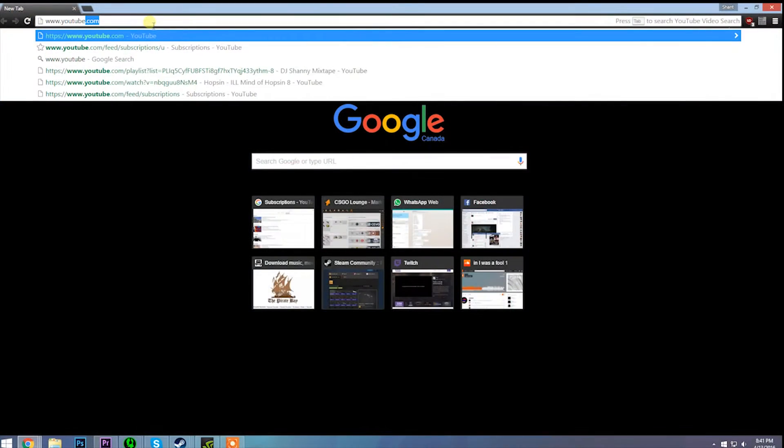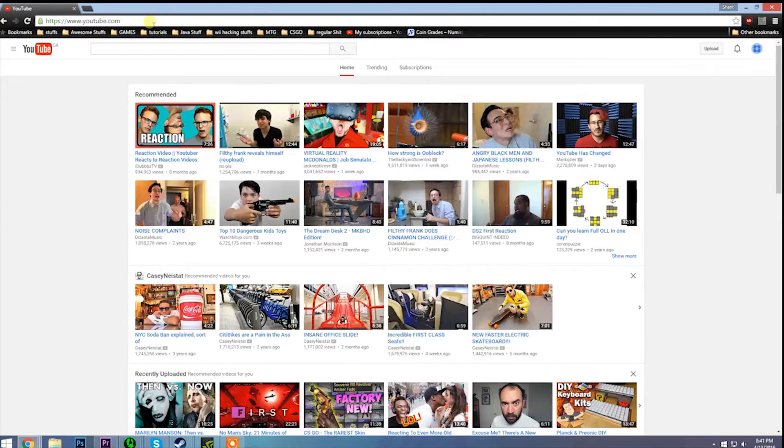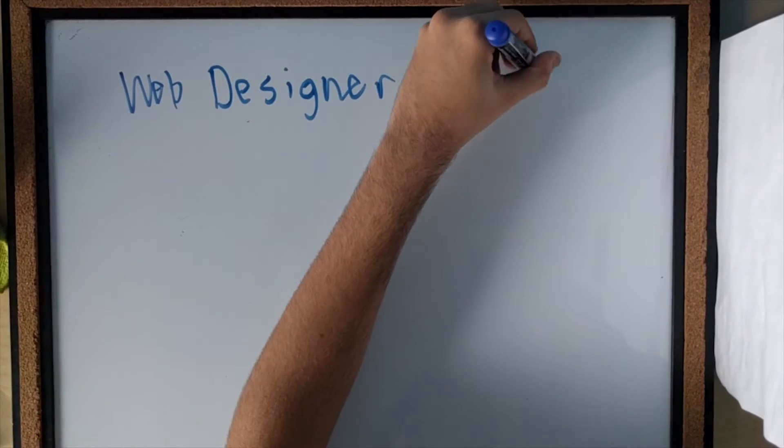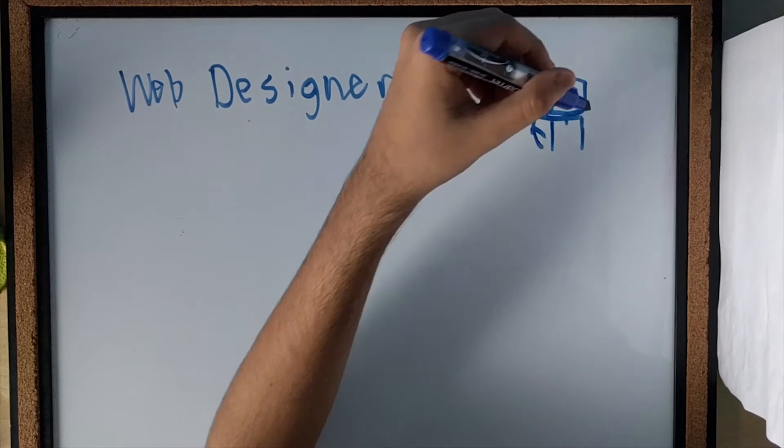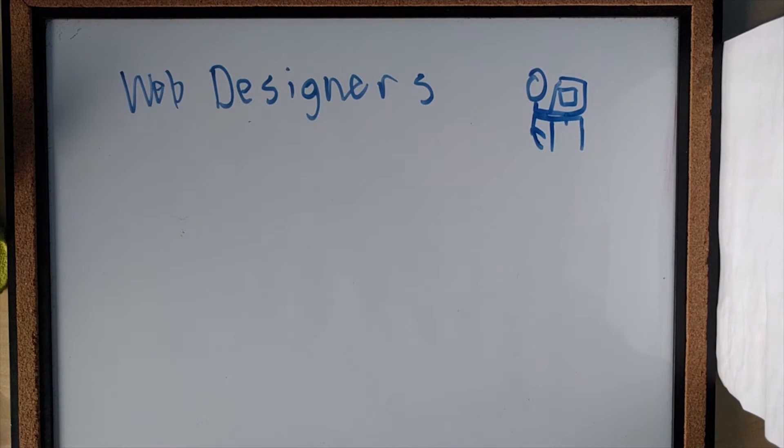When your website loads, you see the homepage. Most websites nowadays are designed by teams of people we call web designers. These people write lines of text that the computer can understand. When your internet browser loads the website, it translates that code into something that you can understand, such as pictures, videos, and text.